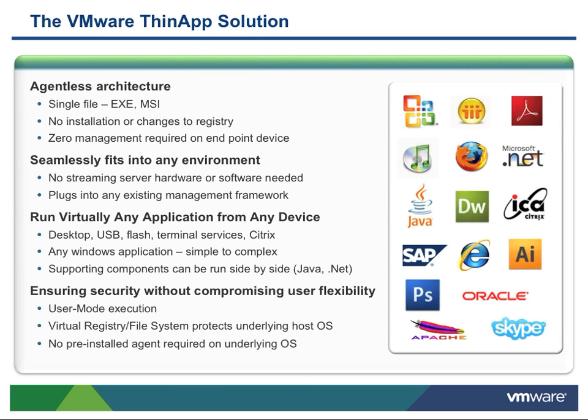VMware ThinApp is an application virtualization solution that requires no local software. We take everything that makes up the application — its file system and registry — and abstract that into a single, self-contained executable. Using more than one ThinApp to virtualize components of an application, like .NET or Java, will allow you to dynamically assemble the use of your applications at runtime.